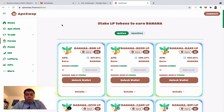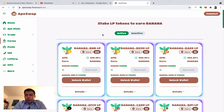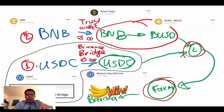ApeSwap is very new right now and it's on the Binance chain, so it's quite difficult to get your money there and out. I'm going to explain step by step how to do that. We're going to start with the easy thing — that is step two on this diagram. We're going to skip step one because that's super advanced — I'll talk about that at the end.